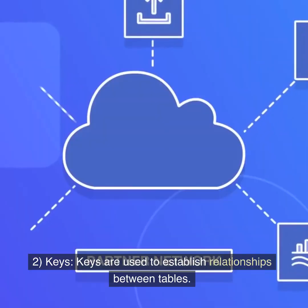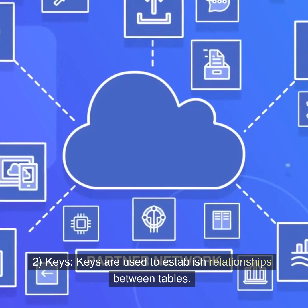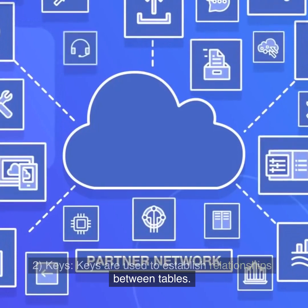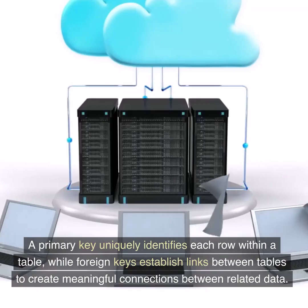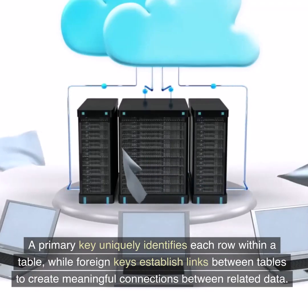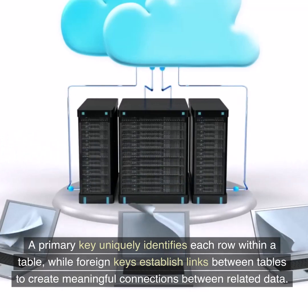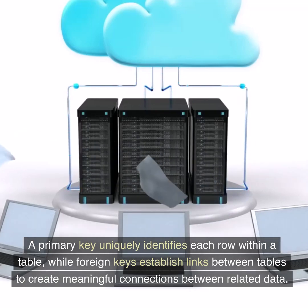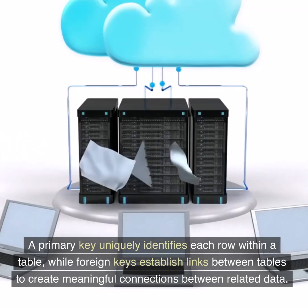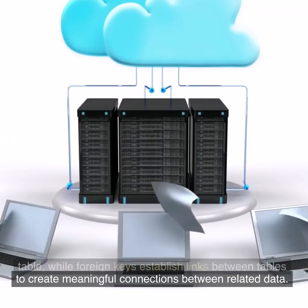2. Keys. Keys are used to establish relationships between tables. A primary key uniquely identifies each row within a table, while foreign keys establish links between tables to create meaningful connections between related data.